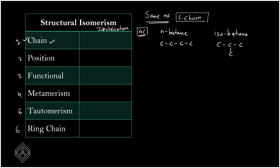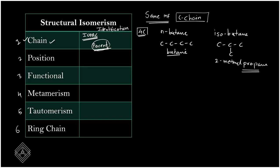To identify chain isomerism by IUPAC name: the parent chain section changes. For the first compound, the IUPAC name is butane (4-carbon parent), whereas the second compound is 2-methylpropane (3-carbon parent: propane). When the parent chain section differs, that indicates chain isomerism.